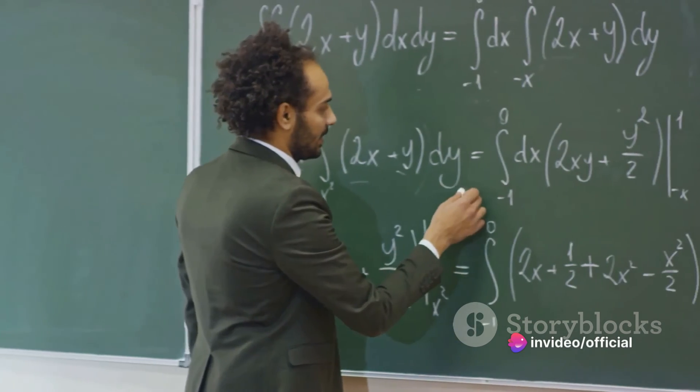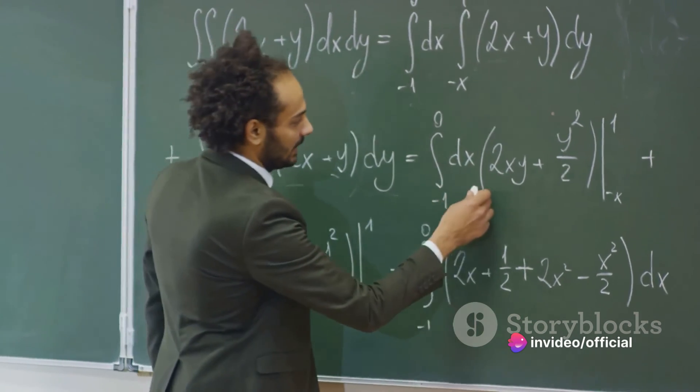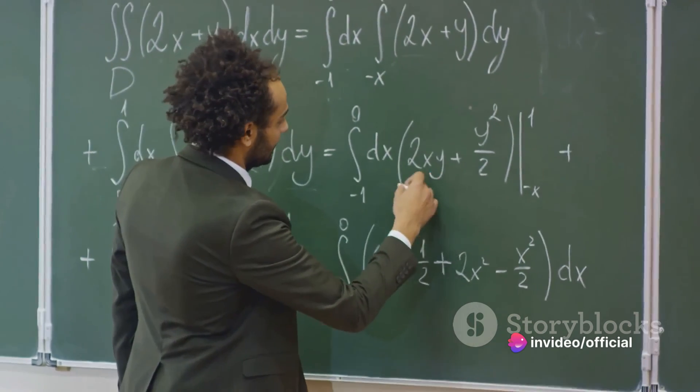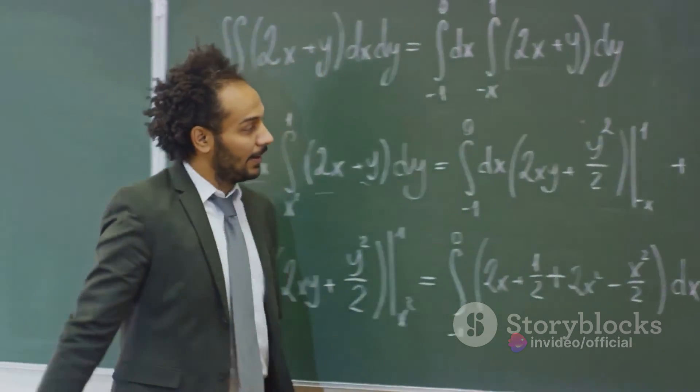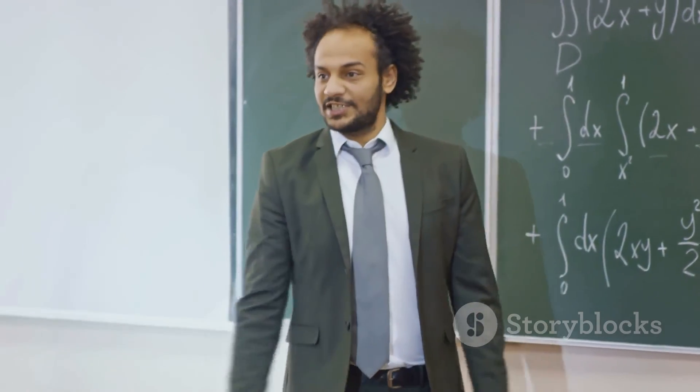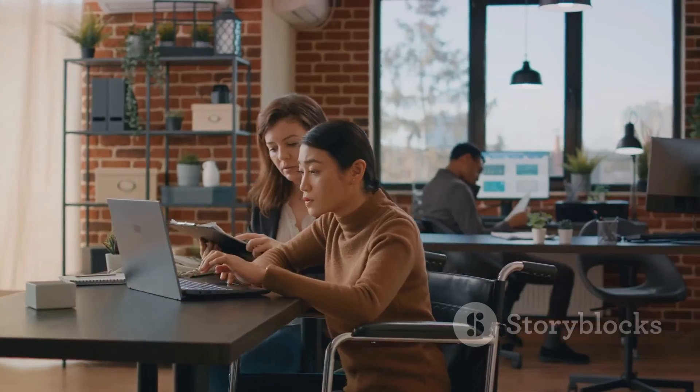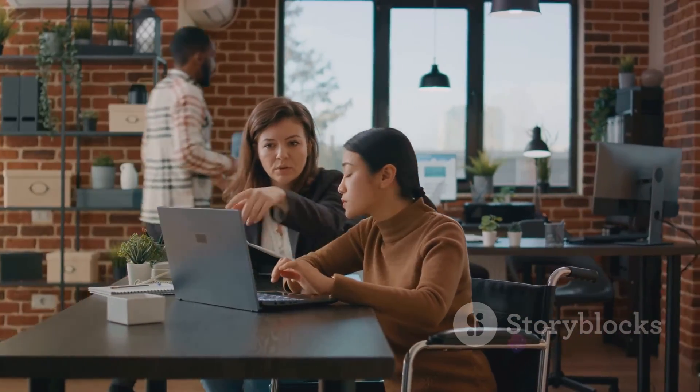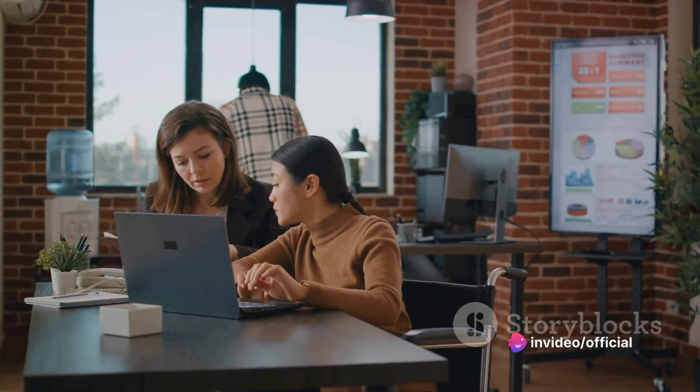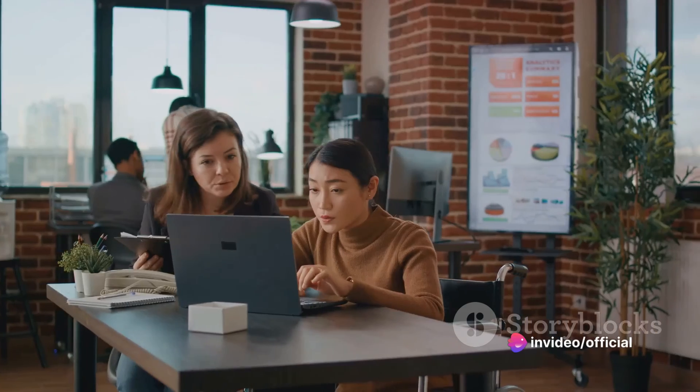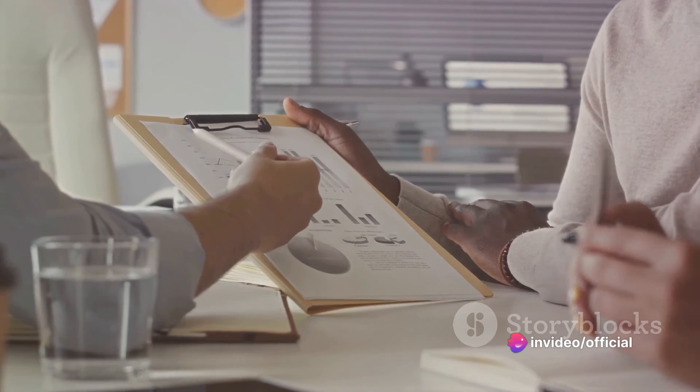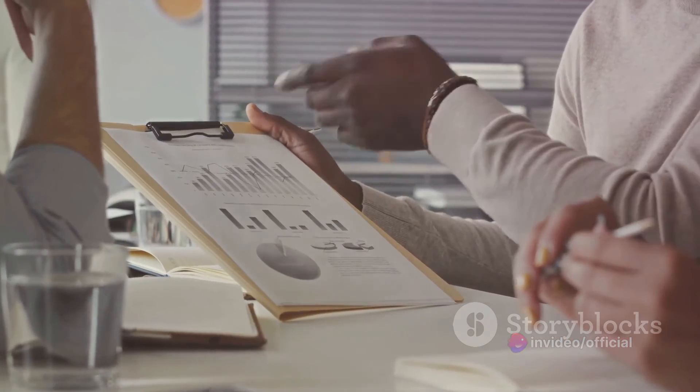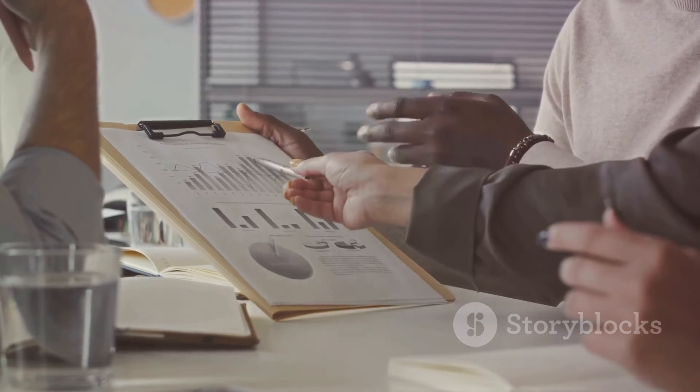You then choose a set of weights for these moment conditions. The idea is to find the parameter values that make your moment conditions as close to being satisfied as possible, given these weights. The beauty of GMM is its versatility. It doesn't require as many assumptions as other methods, like ordinary least squares or maximum likelihood. This makes it a go-to method for many complex statistical problems.